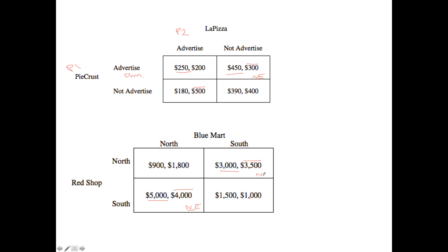There's clearly no dominant strategy in this game. If Red Shop were to always play South, they wouldn't get the best payoff they can always get — they would lose out on an additional payout of 1,500 had they gone North. This shows you can be presented with situations where there's no dominant strategy. Don't feel trapped into answering that there is one just because the FRQ question asks about it — sometimes they test whether you understand the core concept.